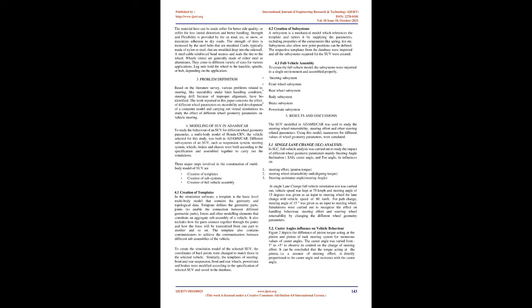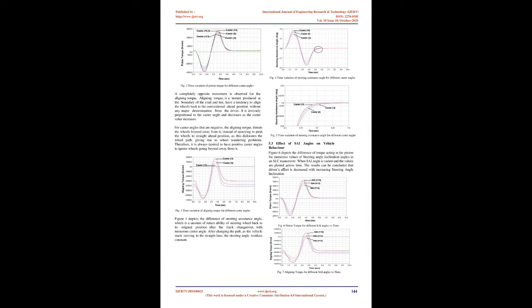Modeling of SUV in Adams/Car. To study the behavior of an SUV for different wheel geometry parameters, a multibody model of Honda CR-V was built in Adams/Car. Different subsystems of the SUV — such as suspension system, steering system, wheels, brakes, and chassis — were built according to specification and assembled together. Three major steps involved in the construction of the multibody model are: Creation of Templates, Creation of Subsystems, and Creation of Full Vehicle Assembly.